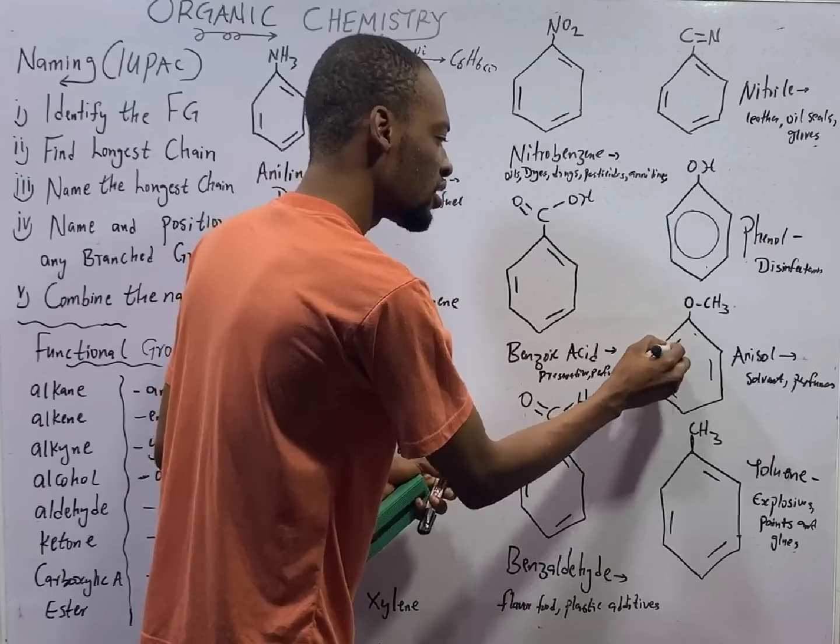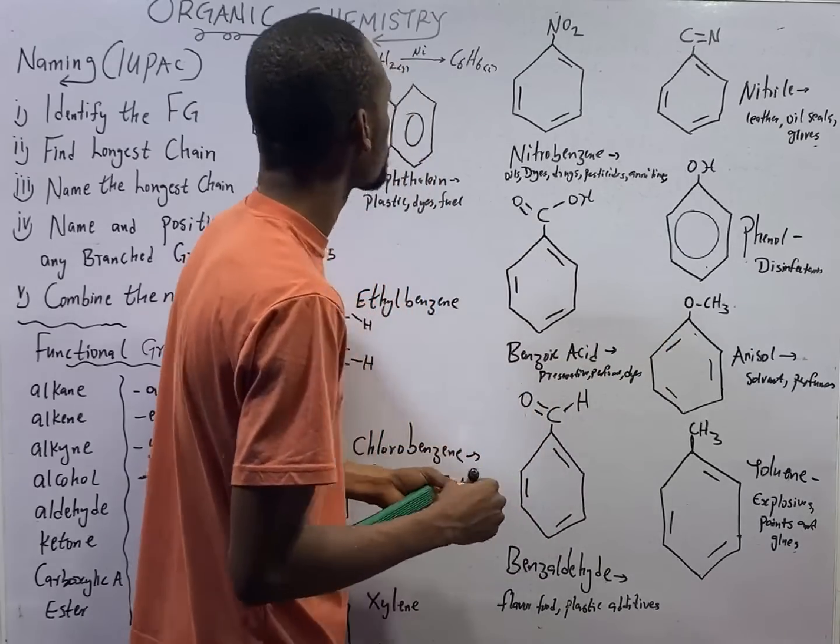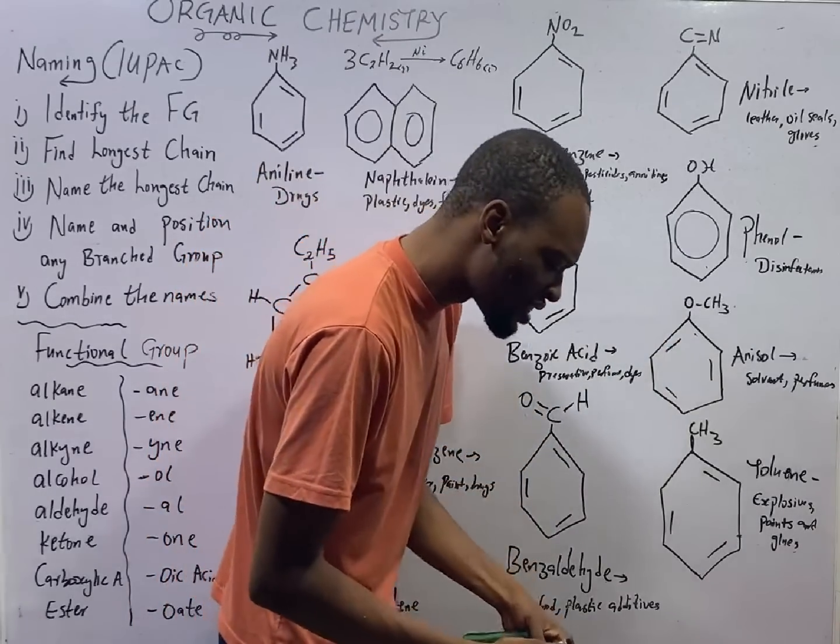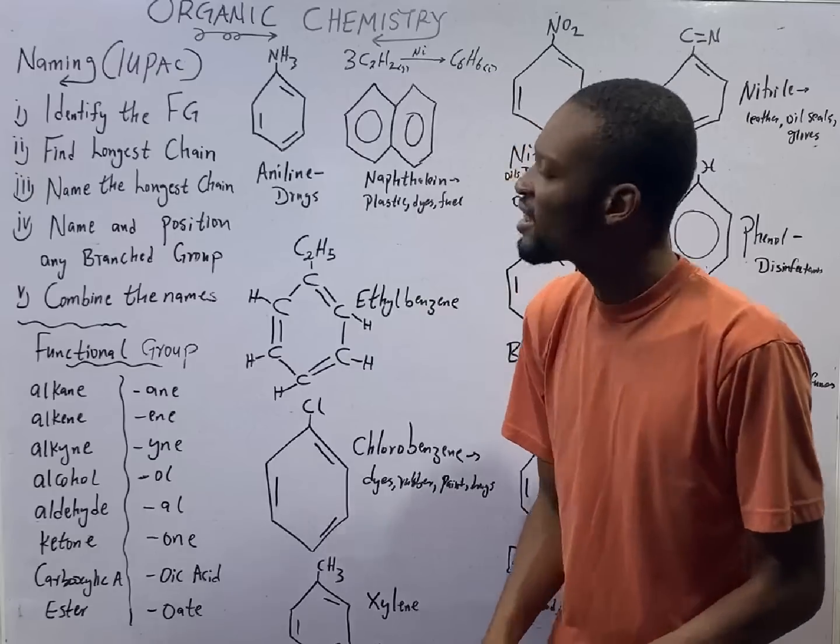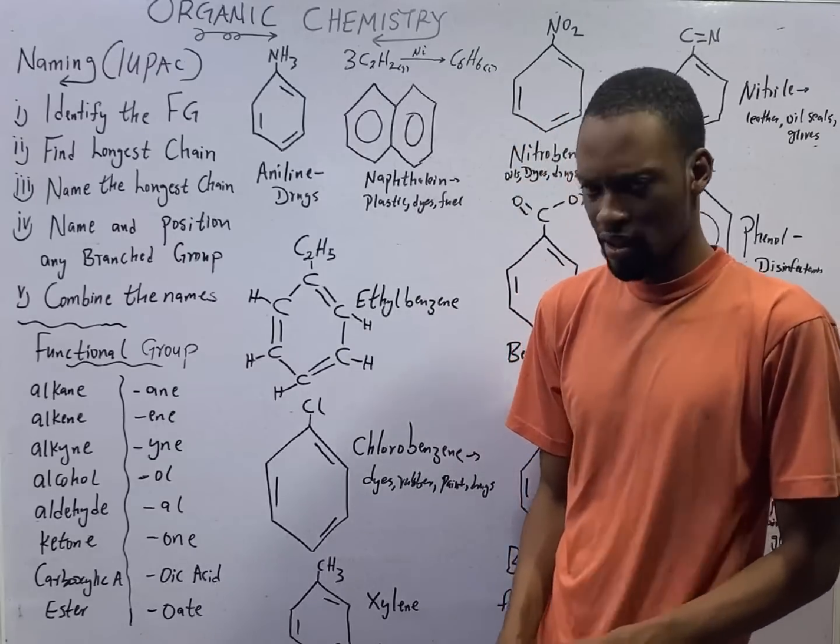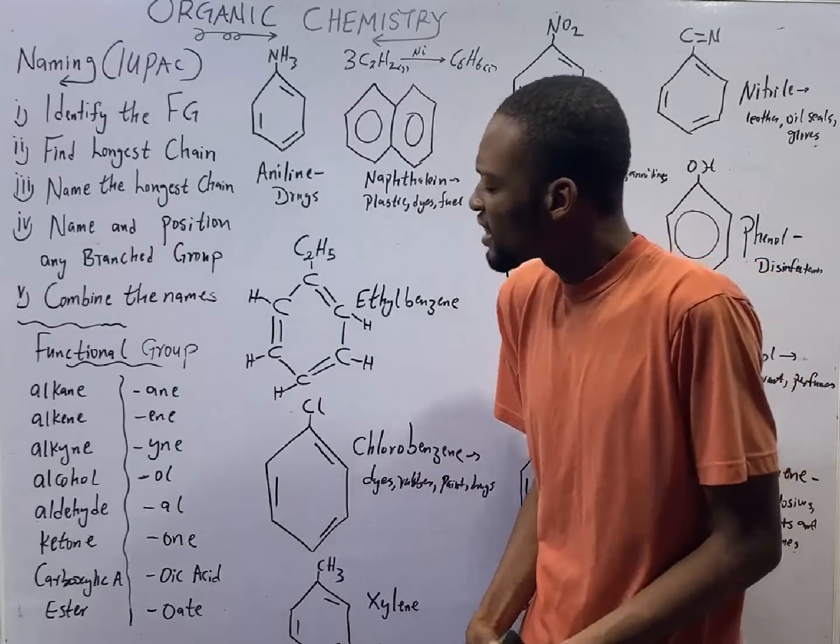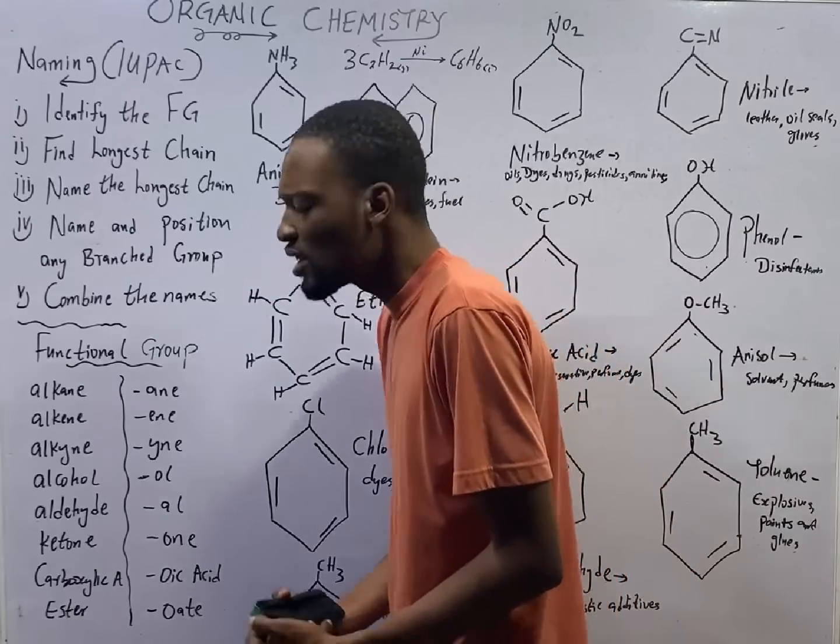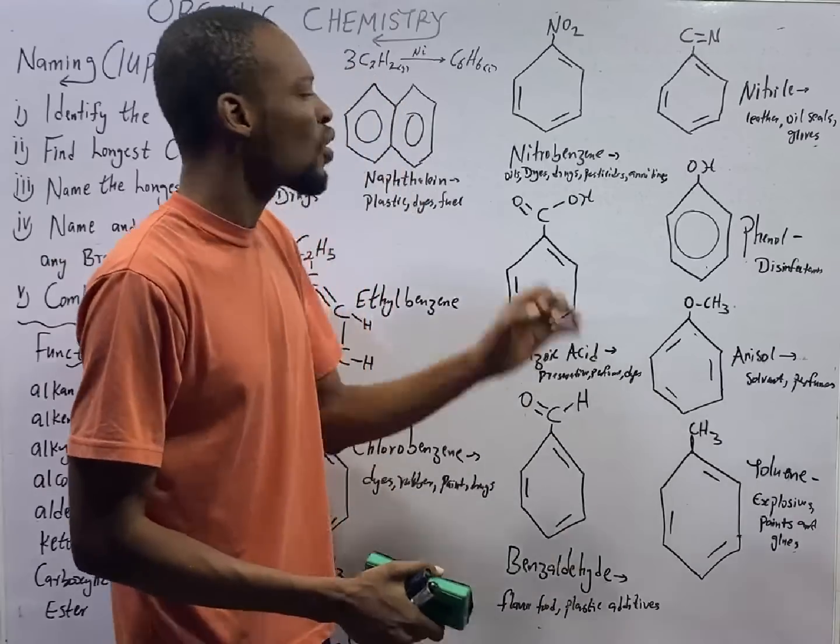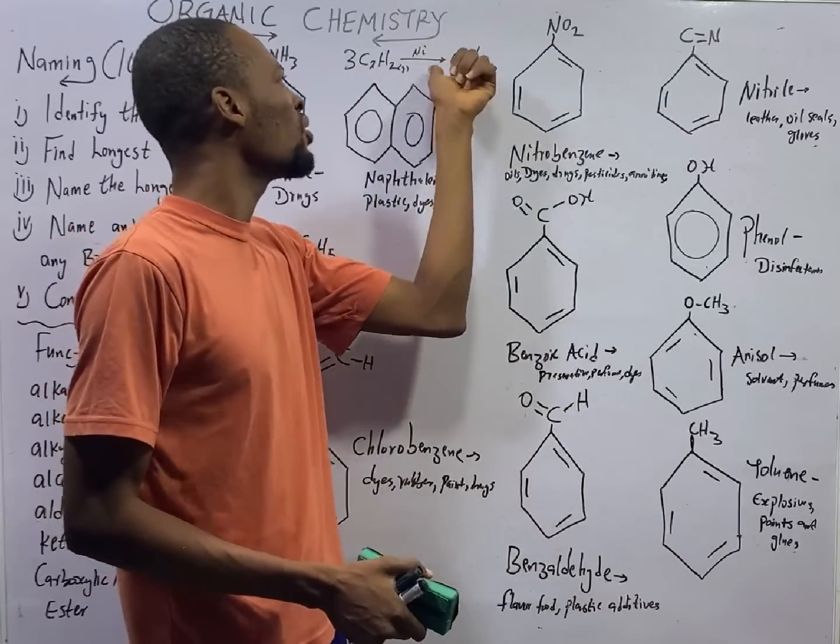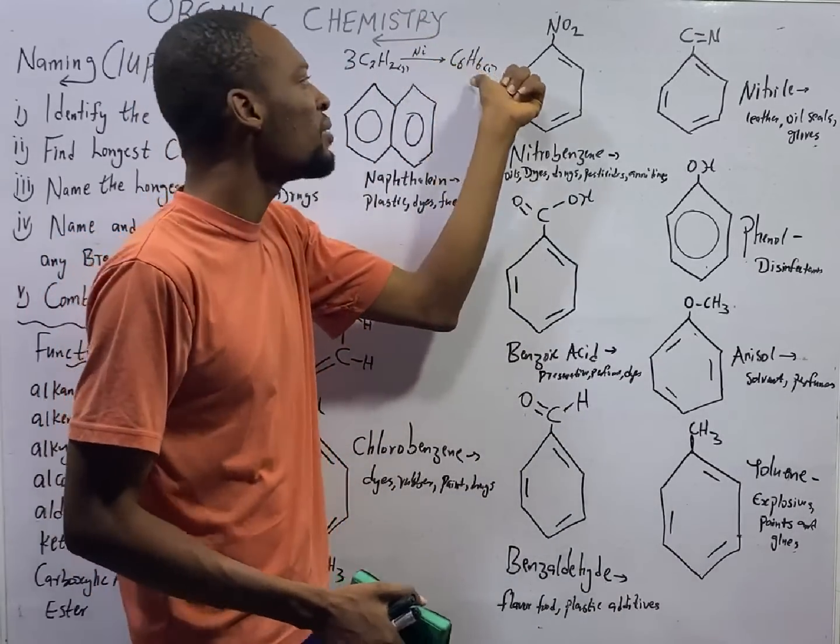Now, to prepare benzene, we use ethyne. Benzene is prepared from ethyne. When you pass ethyne through a hot red tube containing complex organo-nickel catalyst, you will get benzene.